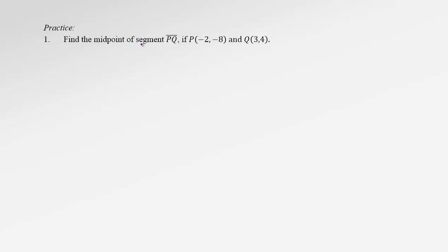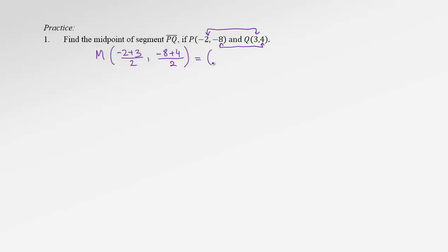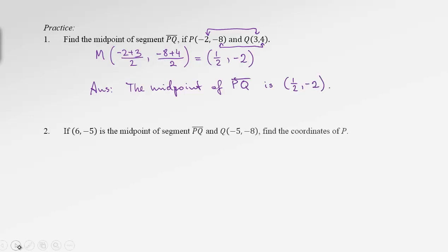Let's practice. Find the midpoint of segment PQ given the coordinates of P and Q. We don't need to graph it — just follow the formula. Let midpoint M have coordinates calculated as averages: first coordinate is negative 2 plus 3 over 2, and second coordinate is negative 8 plus 4 over 2. So the first coordinate is 1 half, and the second is negative 4 over 2, which is negative 2. The midpoint of segment PQ is one half, negative 2.